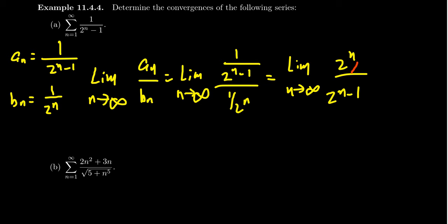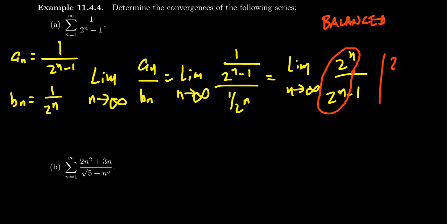L'Hôpital's rule does apply, but in this situation we can look at the dominant terms. On top we have 2^n and on the bottom we also have 2^n as the fastest growing term — this is a balanced ratio. So this limit is going to go to 1. For a bit more justification, you can multiply top and bottom by 2 to the negative n, which cancels to give 1 on top and 1 minus 2 to the negative n on the bottom. As n goes to infinity, 2 to the negative n goes to zero, so you get 1 over 1, which equals 1.